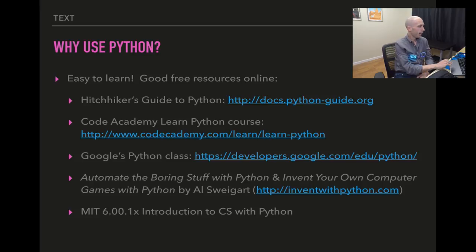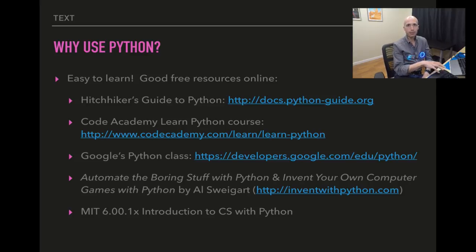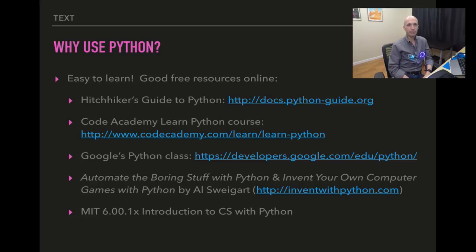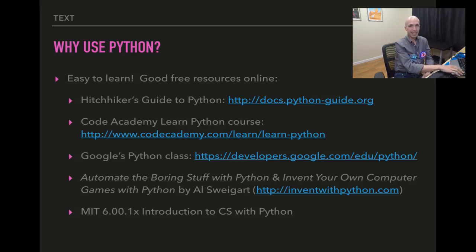I also mentioned a couple of books: Automate the Boring Stuff with Python and Invent Your Own Computer Games with Python are both excellent books targeted at beginners. And if you're more advanced, Python is a powerful language used everywhere — even MIT uses Python in their introductory computer science courses. You can check out the MIT 6.00.1x course online, which is free. If it's good enough for MIT, it's probably good enough for you.